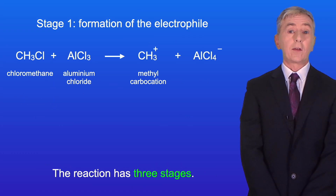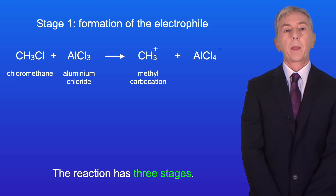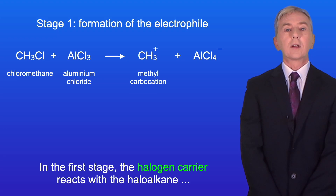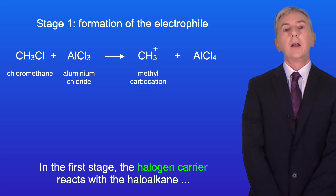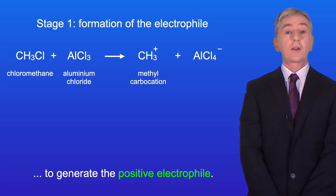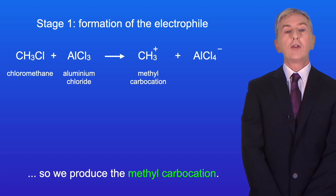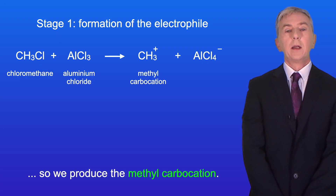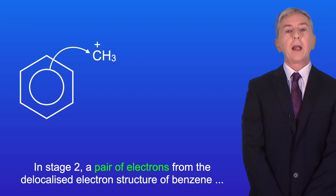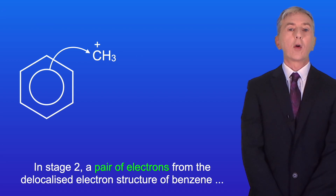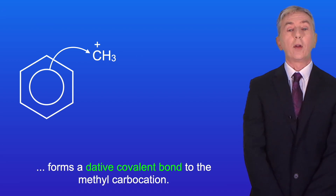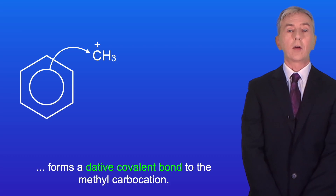The reaction has three stages. In the first stage the halogen carrier reacts with the haloalkane to generate the positive electrophile. In this example the haloalkane is chloromethane, so we produce the methyl carbocation. In stage two, a pair of electrons from the delocalized electron structure of benzene forms a dative covalent bond to the methyl carbocation.